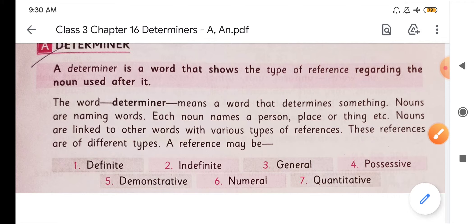So what is the meaning of the word determiner? That determines something. That says something. So nouns are naming words we know. In the same way each noun names a person, place or thing. We know the definition of noun. So likewise these are being categorized into different types.